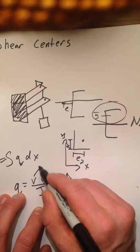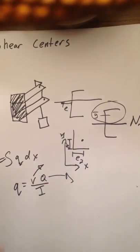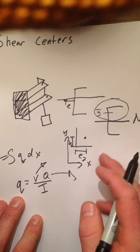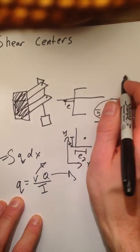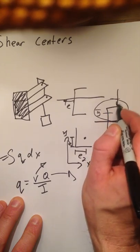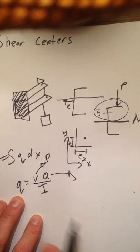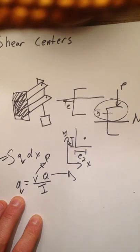Then V is just whatever basic force would be there. So a lot of these questions will just say there's a force P coming, so you can just say V equals P.